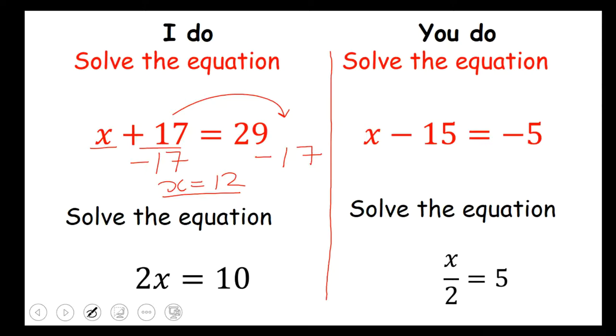Okay next question 2x equals 10. 2x means 2 times by x equals 10. So now we need to do the inverse. The inverse of times is divide. So we need to get x on its own. So we divide both sides by 2.